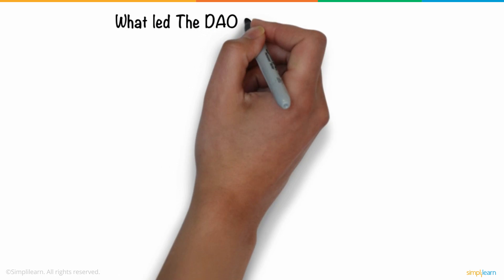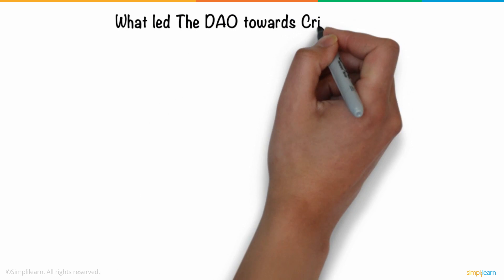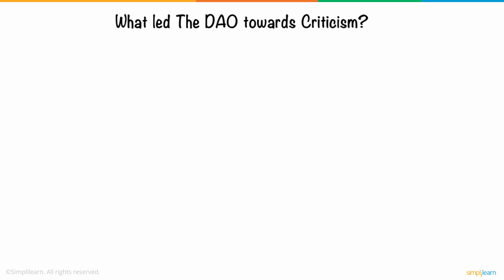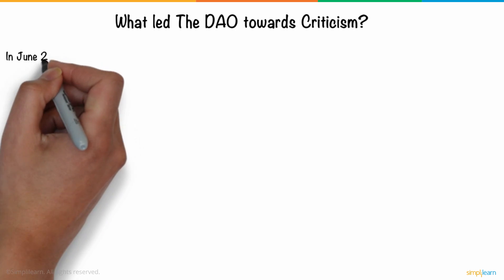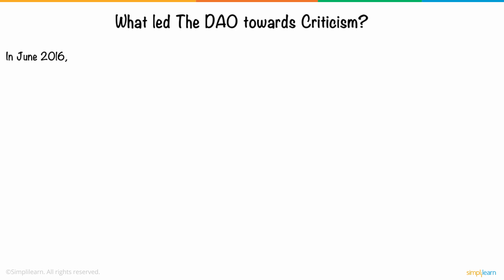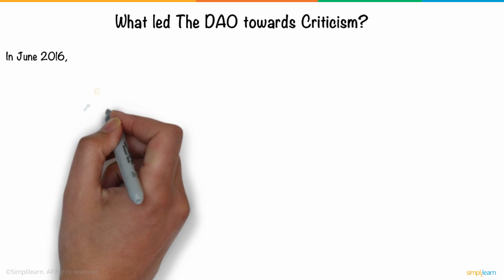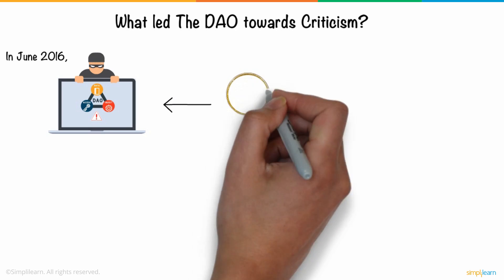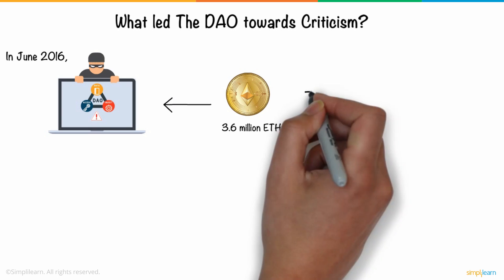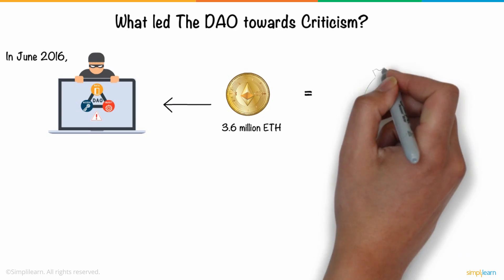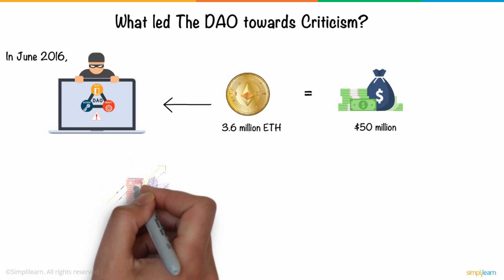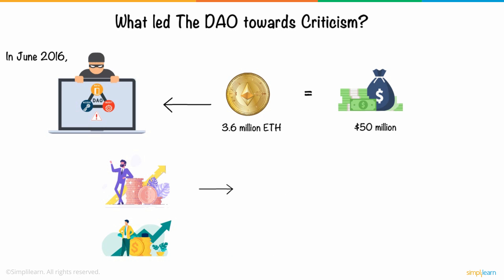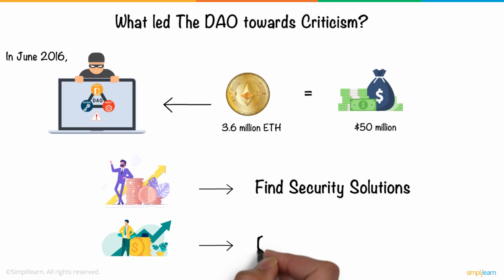The question then arises: what led the DAO towards criticism? This is due to the infamous DAO hack. Back in June 2016, hackers used DAO's vulnerabilities to assault its treasury. The hackers were able to gain access to 3.6 million Ethereum, valued at around 50 million dollars. This sparked a divisive debate among DAO investors, with some demanding that the DAO be permanently dismantled.